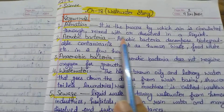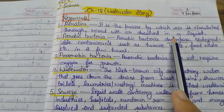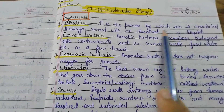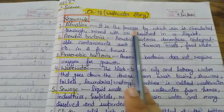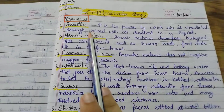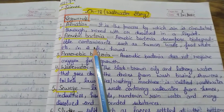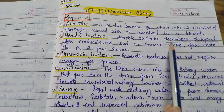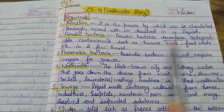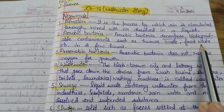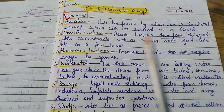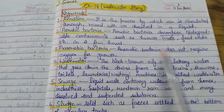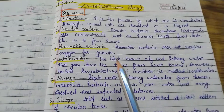Next, keywords. Aeration: it is the process by which air is circulated through, mixed with, or dissolved in a liquid. The process of dissolving air into liquid is called aeration.